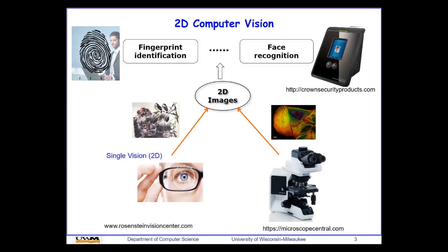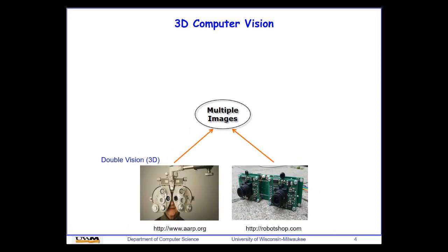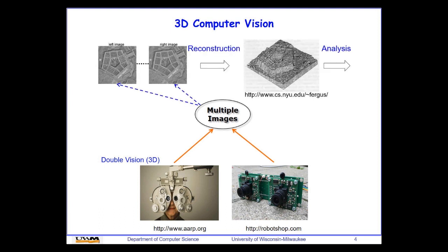But the lack of depth information in 2D images makes it impossible for many applications like 3D quantification, 3D visualization, or 3D animations. In order to have depth information, we can use two eyes — or at least two lenses in camera systems — to capture the depth information and perceive the third dimension. With multiple views, it's possible to reconstruct 3D models.